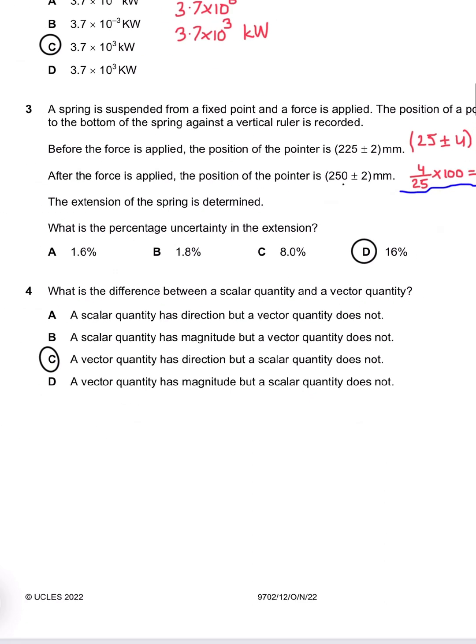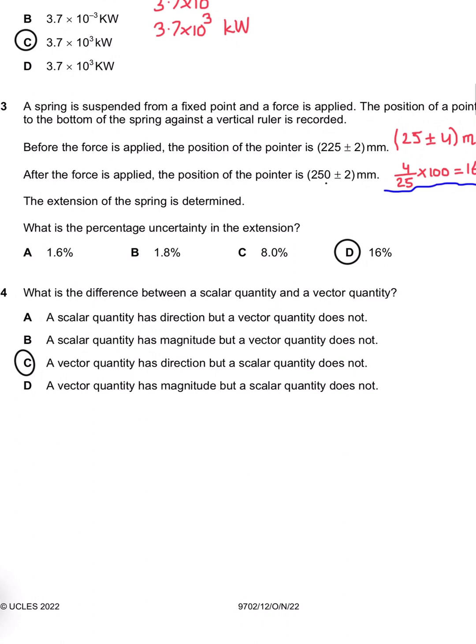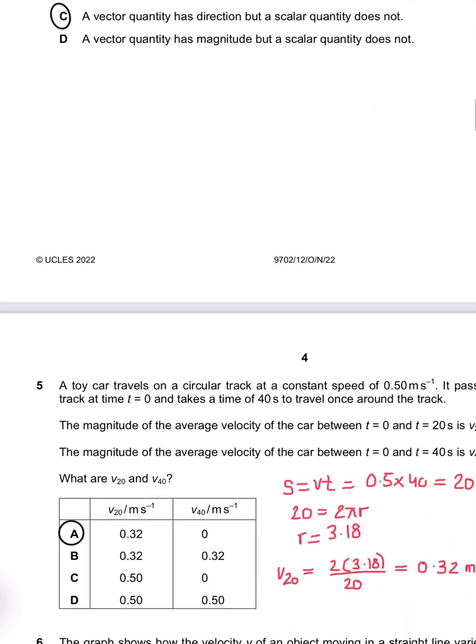Question number 4 says, what is the difference between a scalar quantity and a vector quantity? C is the appropriate answer. It says that a vector quantity has direction and scalar quantity does not.